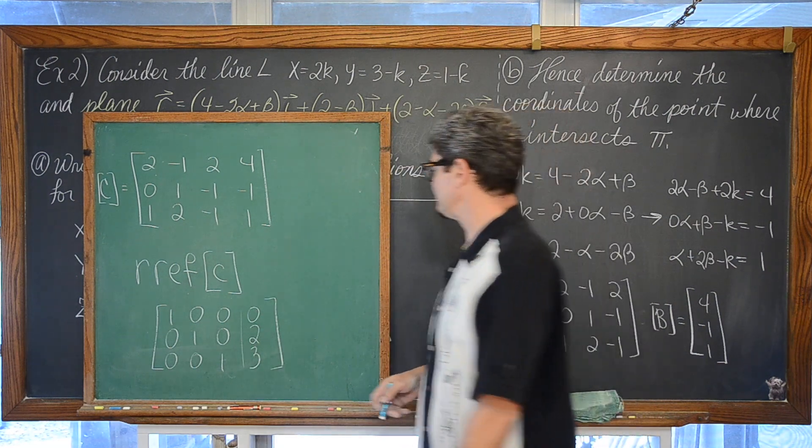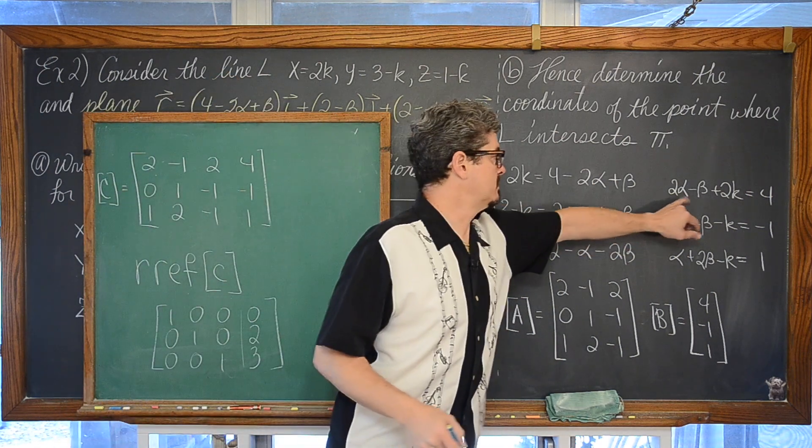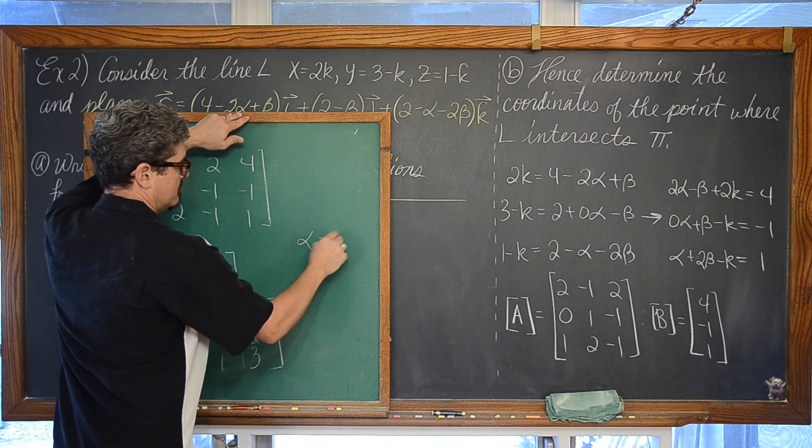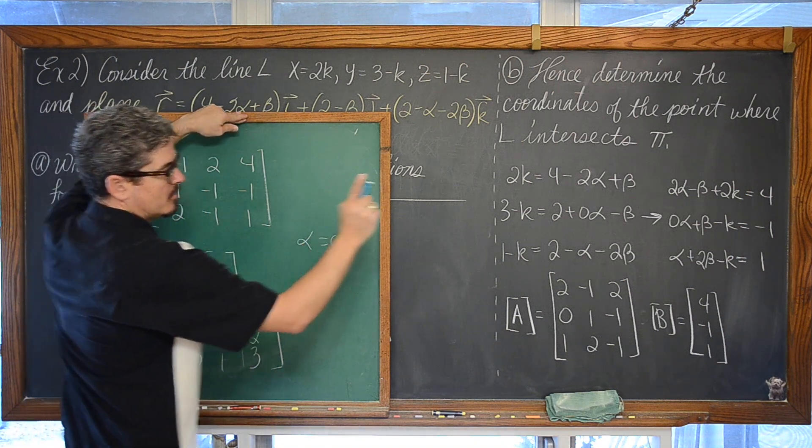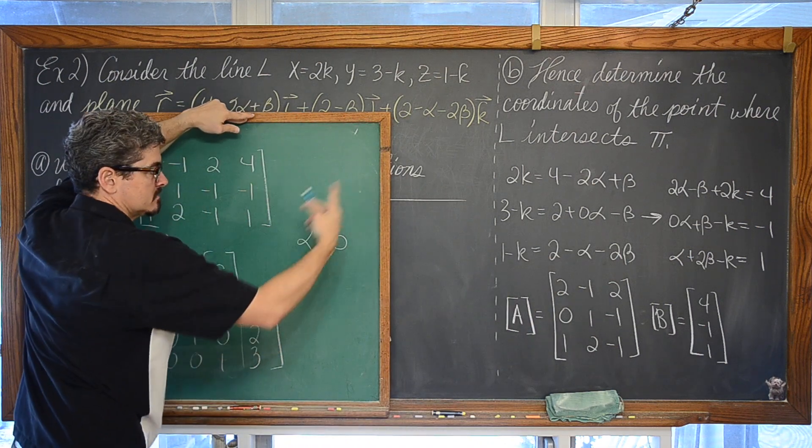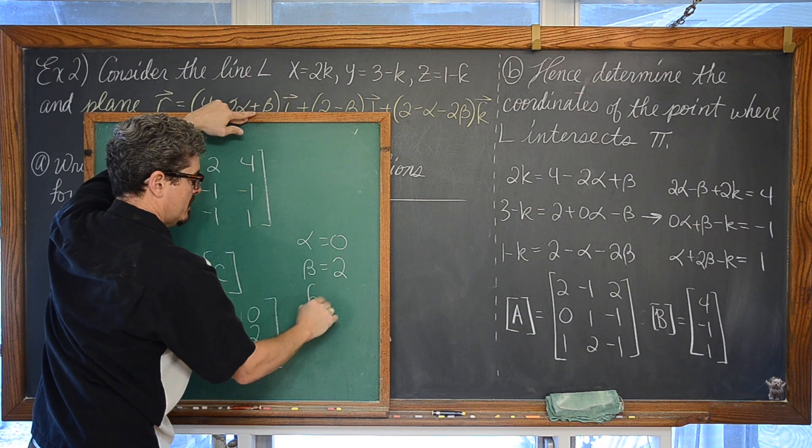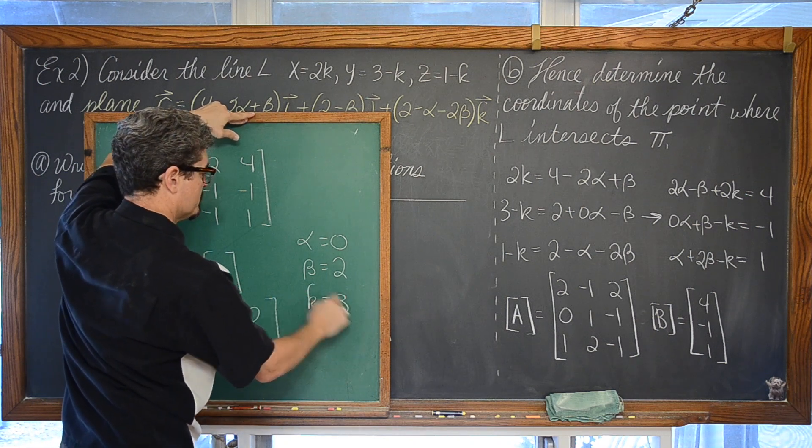And we have that alpha is equal to zero, beta, because that's the next variable in our column there, is equal to two, and k is equal to three.